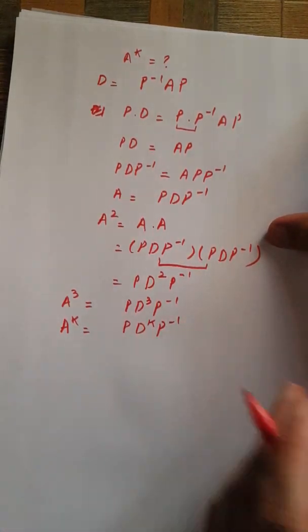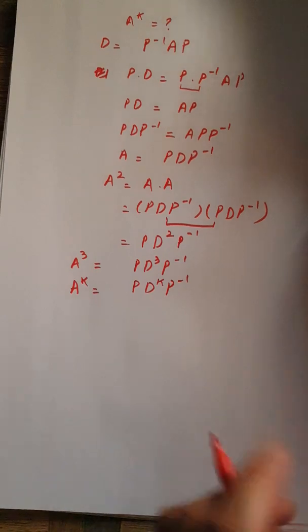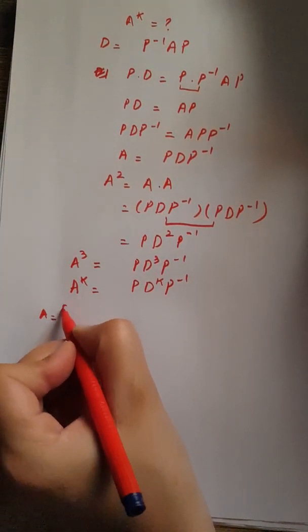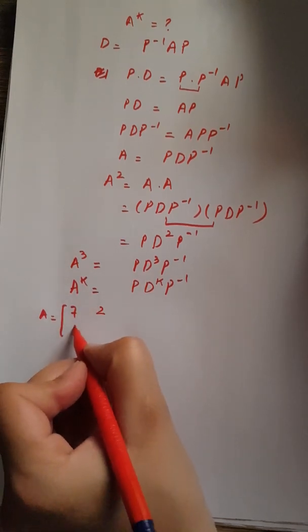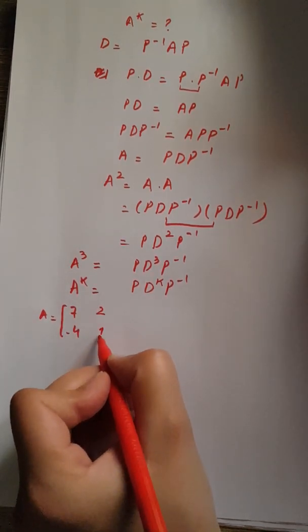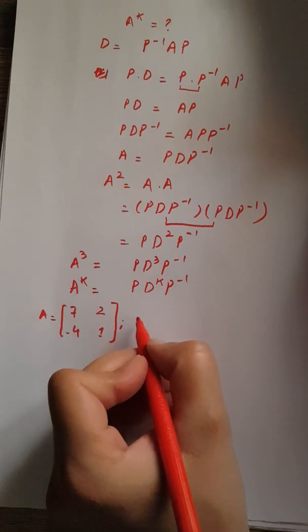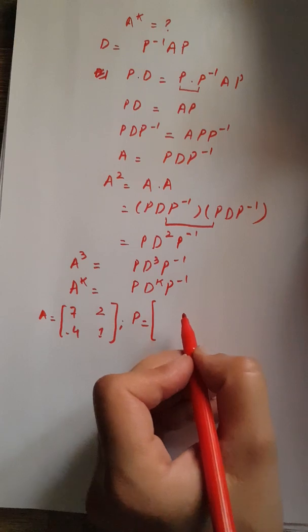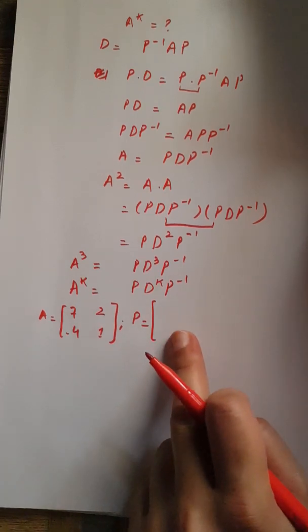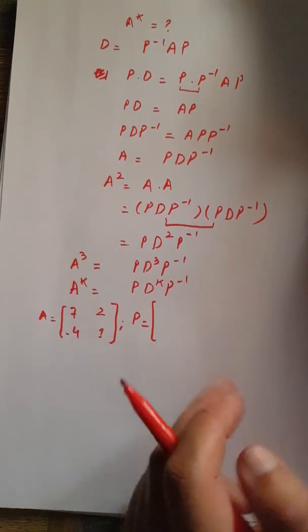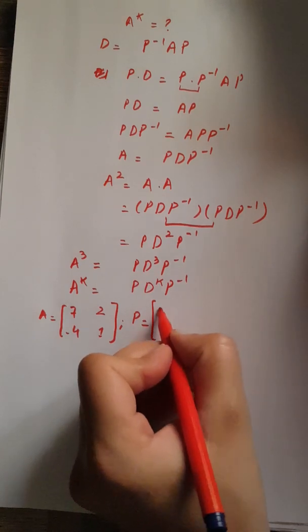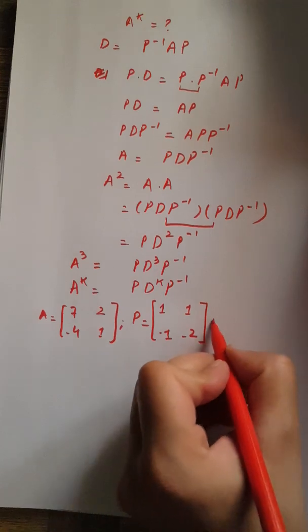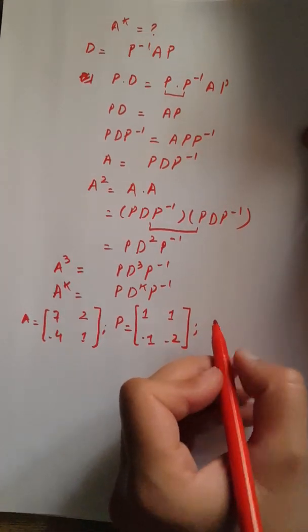We have already constructed P for this matrix, which consists of linearly independent eigenvectors of A. P equals [1, 1; -1, -2].